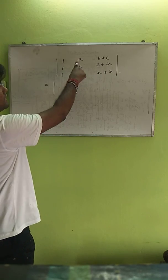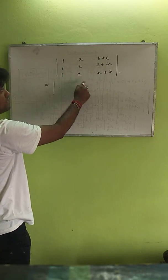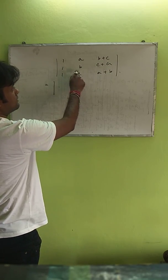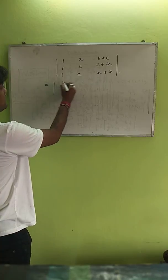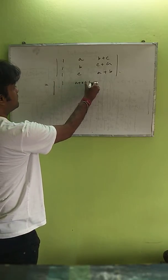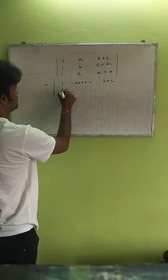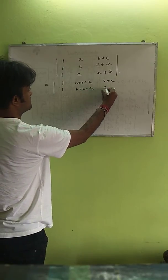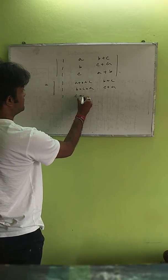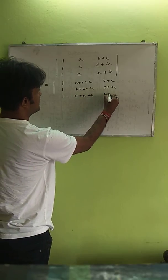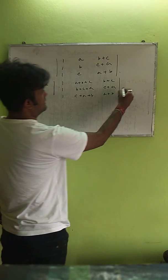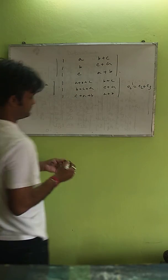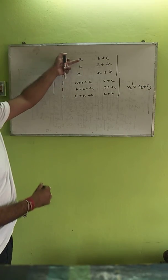If we add the second column to the third column, then a, b, c will come here. That gives: 1, a+b+c, b+c; 1, b+c+a, c+a; 1, c+a+b, a+b. Here we change C2 to C2 + C3, so only C2 is changed.